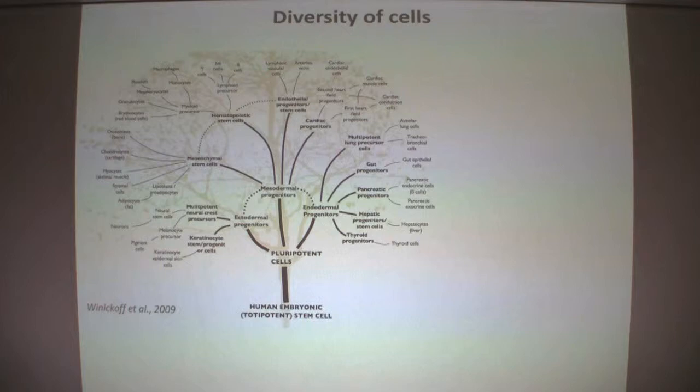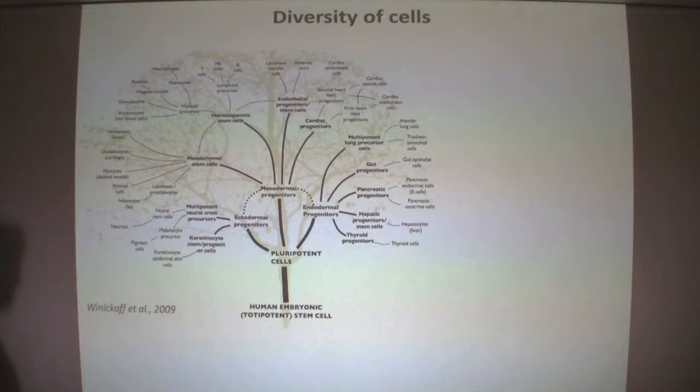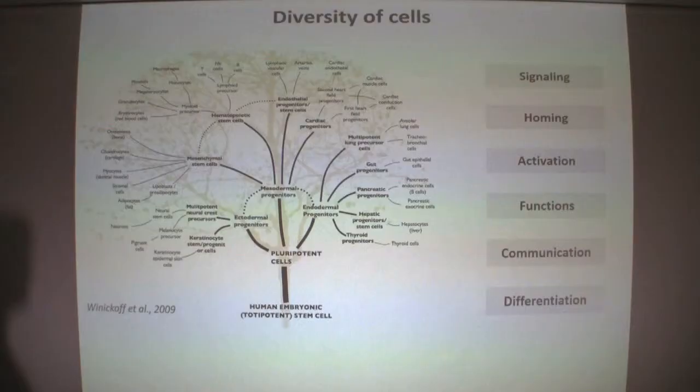Cells are very diverse. This is a tree illustration of human cells that can emerge from stem cells, and of course there are corresponding phenotypes to all of these subsets, which you can further superimpose with certain cell properties such as cell signaling, homing receptor expression, markers that reflect cellular activation, cell functionality like cytokines in T cells and other cells, cell communications by adhesion but also over distance, and differentiation. For most of these features and biological functions we have some markers at hand.